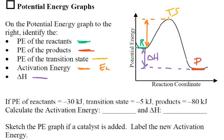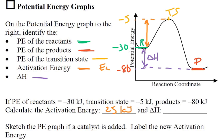If the potential energy of the reactants is negative 30, the transition state is negative 5, and the products are negative 80 — calculate the activation energy. So it's negative 5 minus negative 30, which gives us 25 kilojoules. The activation energy is 25 kJ. And the delta H is negative 80 minus negative 30, which gives us negative 50 kilojoules.